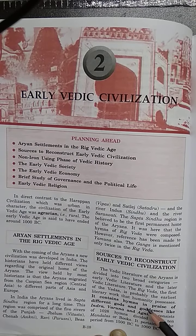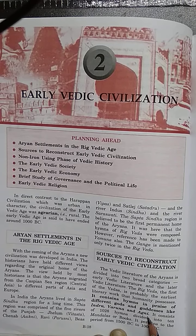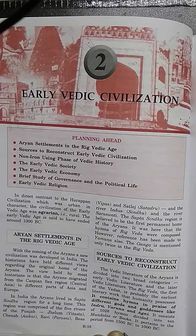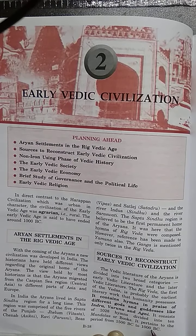Things mentioned in the Rig Veda include the gods and goddesses they worshipped and the type of worship. The Rig Veda is also the oldest Veda, and it consists of 1028 hymns divided into 10 mandalas or books. It pertains to the period from 1500 BC to 1000 BC, meaning it took many years to complete.